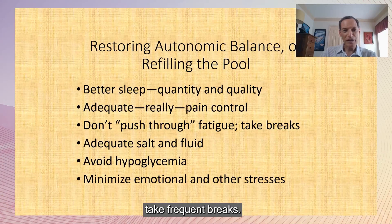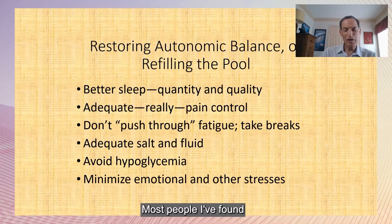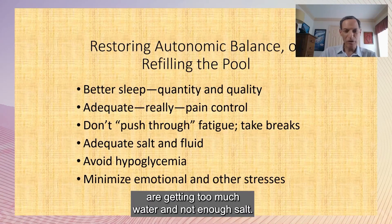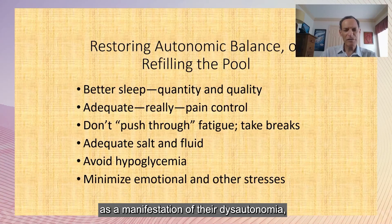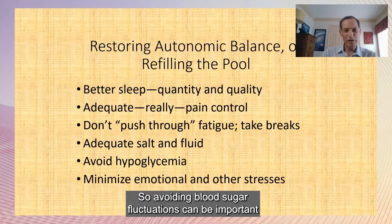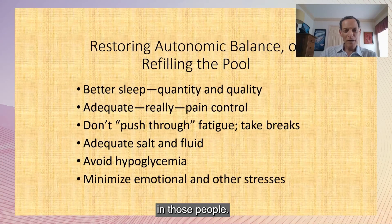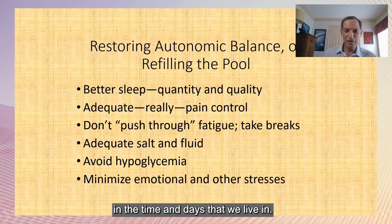Adequate salt and fluid intake is important. Most people told to eat a lot of salt and drink plenty of water are getting too much water and not enough salt. About 15 percent of my dysautonomia patients have fluctuating blood sugars as a manifestation of their dysautonomia, and hypoglycemia is a potent trigger for the sympathetic nervous system, so avoiding blood sugar fluctuations can be important. Minimizing emotional and other stresses is also difficult but necessary.